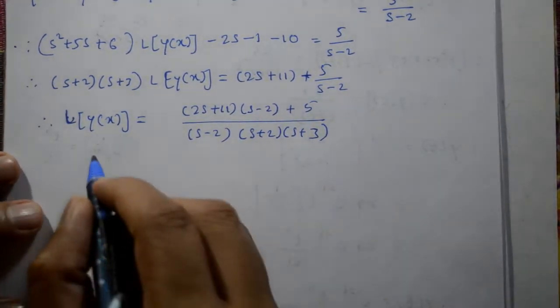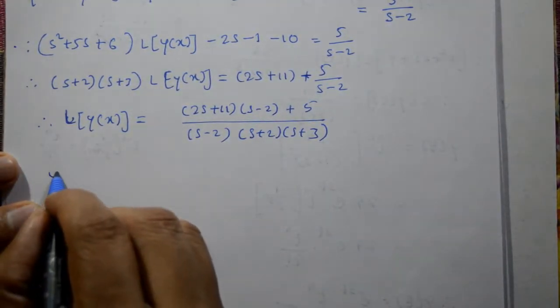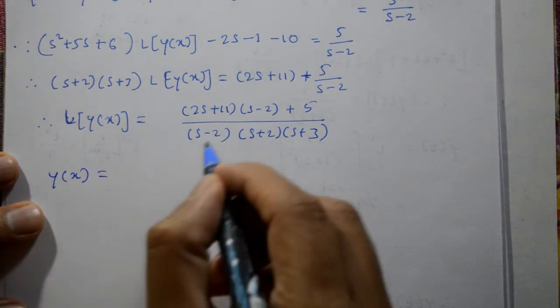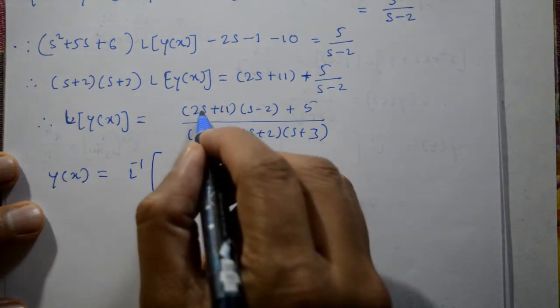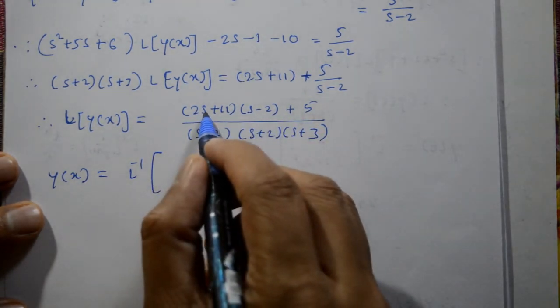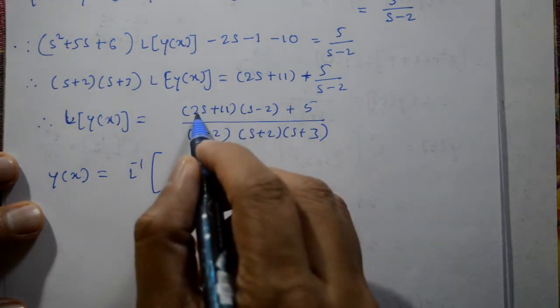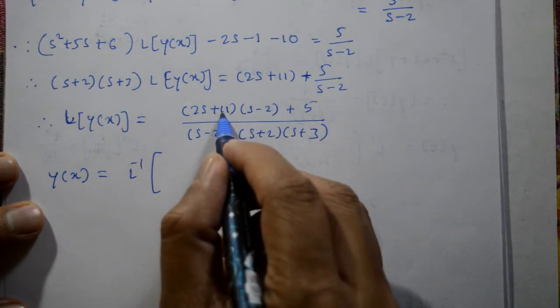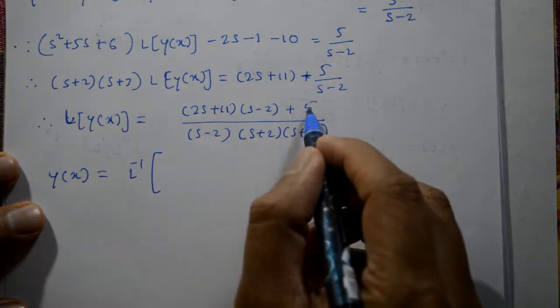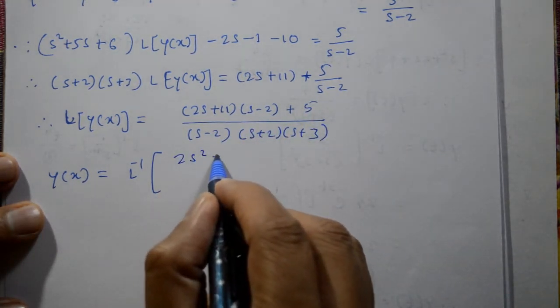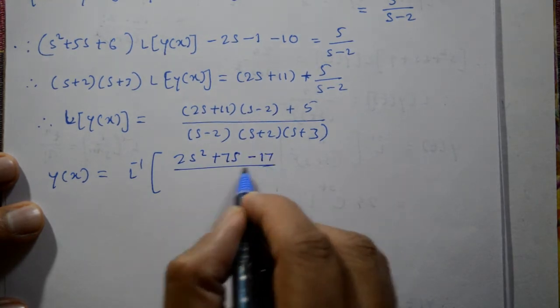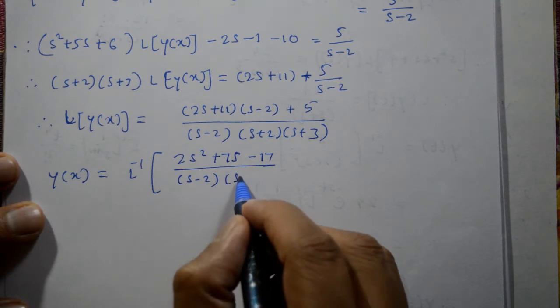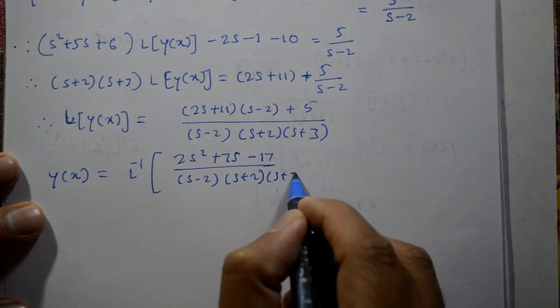Next we apply inverse Laplace transform. So y of x is equal to inverse. Opening this, 2s into s minus 2 gives 2s square, 11 into minus 2 is minus 22, plus 5 gives 2s square plus 7s minus 17 divide by s minus 2 into s plus 2 into s plus 3.